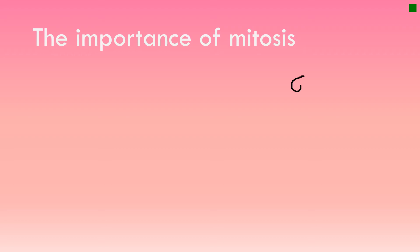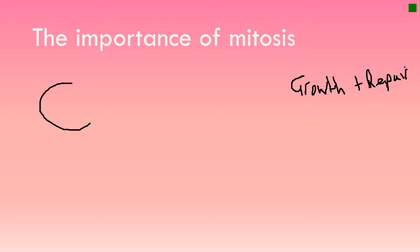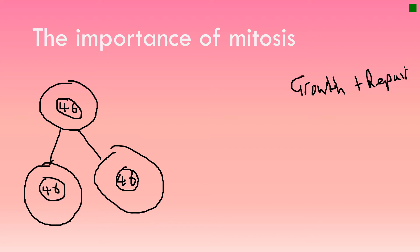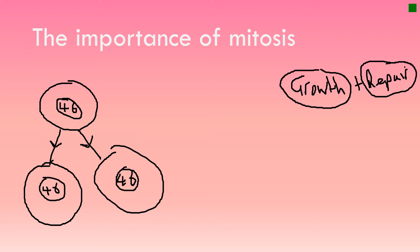Very simply put, mitosis is important for growth and repair. Mitosis is the process by which those 46 chromosomes inside a cell replicate and are passed on to two daughter cells. That is how our cells pass on their genetic information from one cell to the next. That's how we're able to repair our bodies when they need refreshing or when they're broken down, and that's how we grow from being one cell to the trillions of cells in our bodies right now.